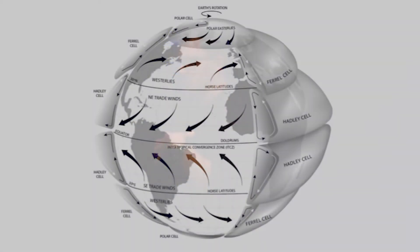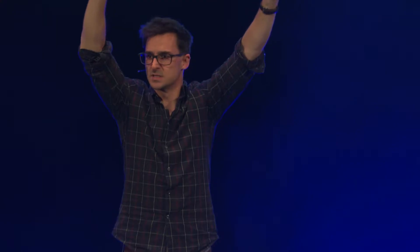We've now pieced together the global picture of the way the winds move. If we start around the equator, this is where it's very sunny and that warm air rises to high altitude, then cools and rolls over and descends back down towards the ground.